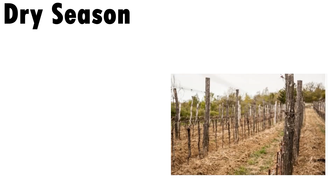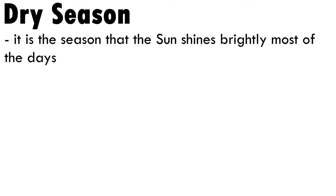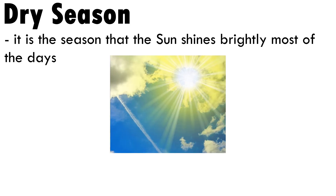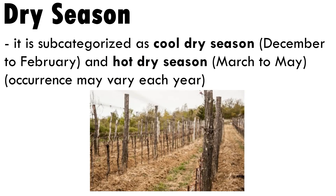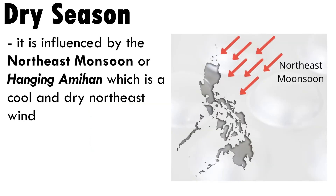The dry season is when the sun shines brightly most of the days. It is sub-categorized as the cold dry season from December to February, and the hot dry season from March to May, though occurrence may vary each year. It is influenced by the northeast monsoon or hanging amihan, which brings cold and dry northeast wind.